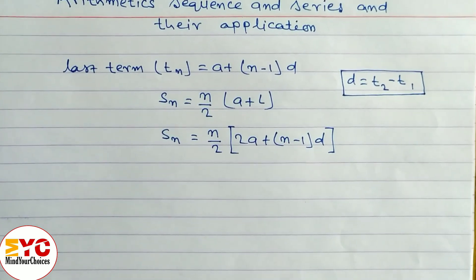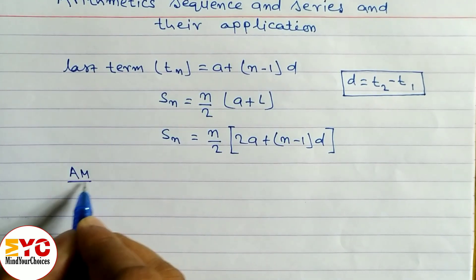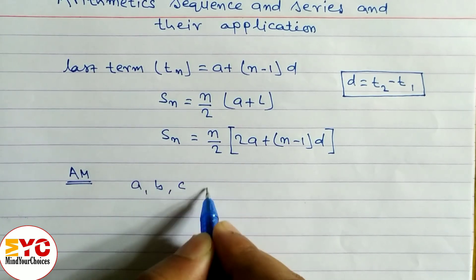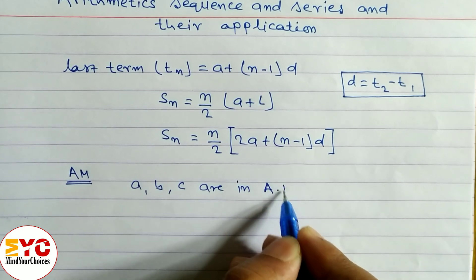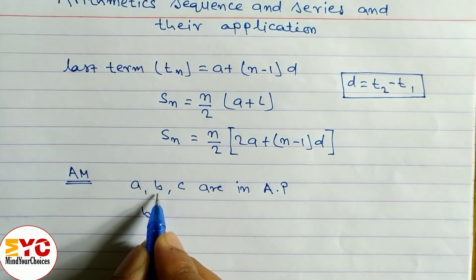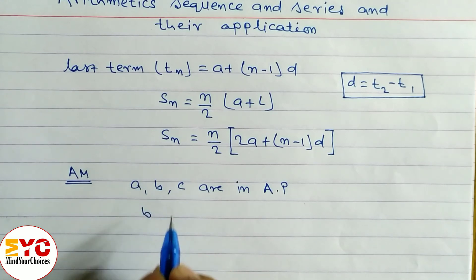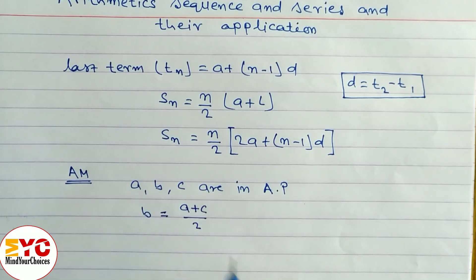Next is arithmetic mean. Suppose we have an example: if a, b, c are in arithmetic progression, then what is the value of b? Here b is known as the arithmetic mean — it is in the middle of a and c. So b is the arithmetic mean of a and c, and b = (a + c) / 2.